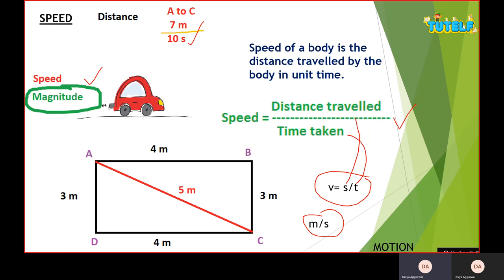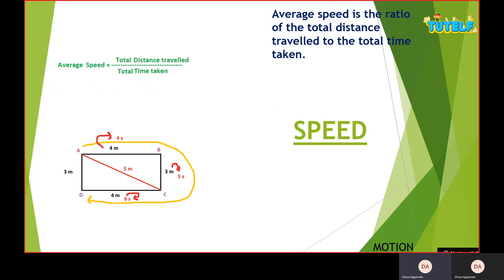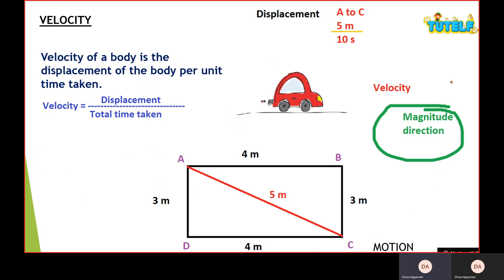It is not necessary that speed remains the same when our vehicle is running, so in that case we use average speed. For A to D, our total distance is 4 plus 3 plus 4 equals 8 meters, divided by total time taken which is 15 seconds. Average speed equals total distance traveled divided by total time taken. The unit is meter per second.